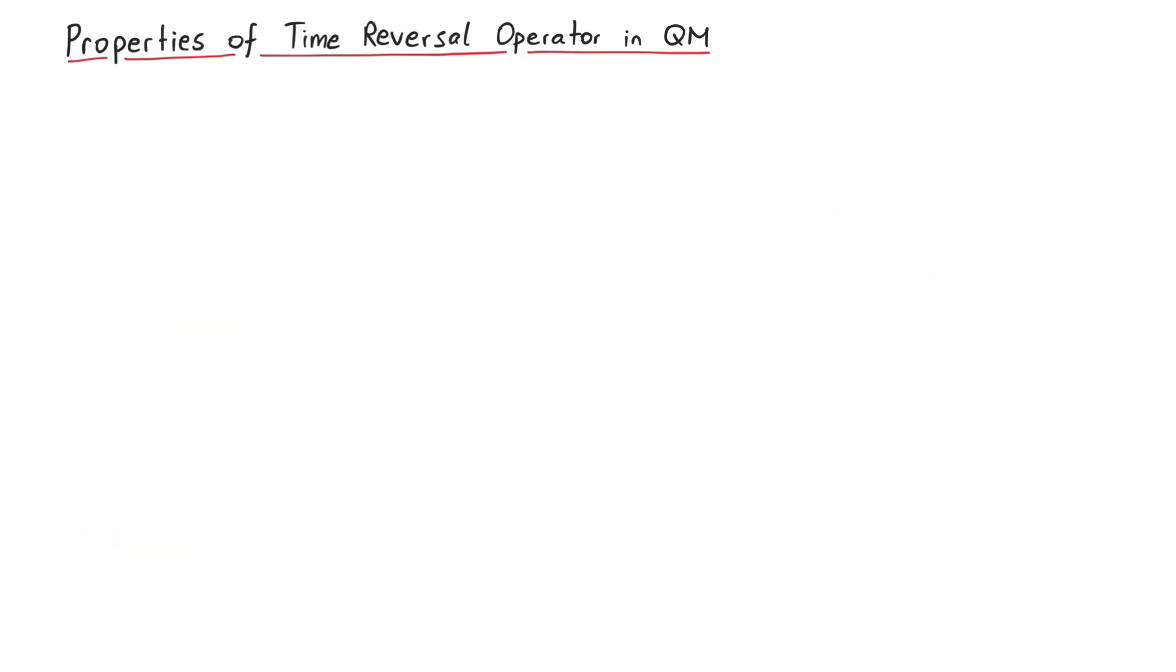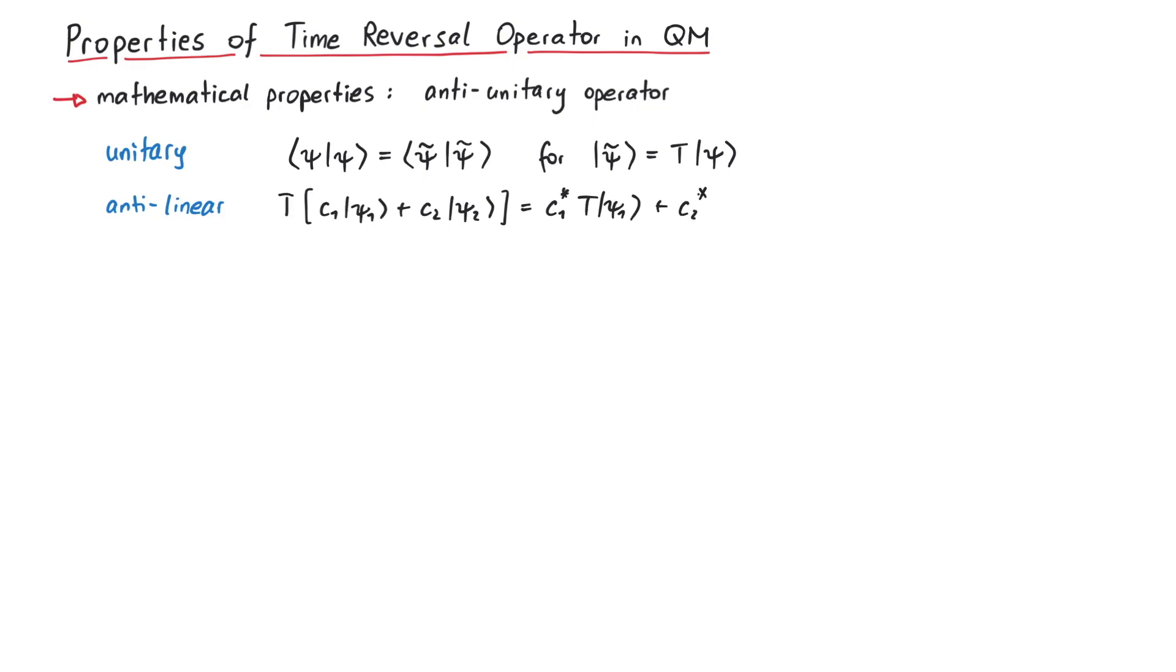The time reversal operator also has some interesting mathematical properties, which are due to the fact that it is an anti-unitary operator. First of all, the definition of an anti-unitary operator is that it is both unitary and anti-linear. Unitary means that norms are preserved after a transformation, and anti-linear is almost the same as linear, but all coefficients of wave functions get complex conjugated.